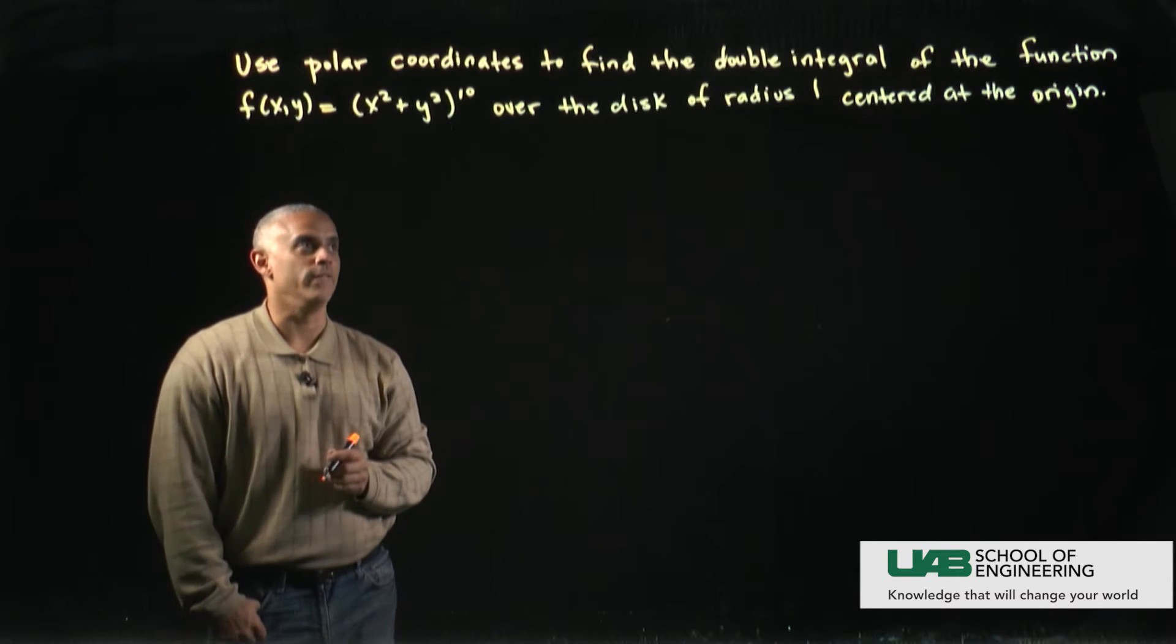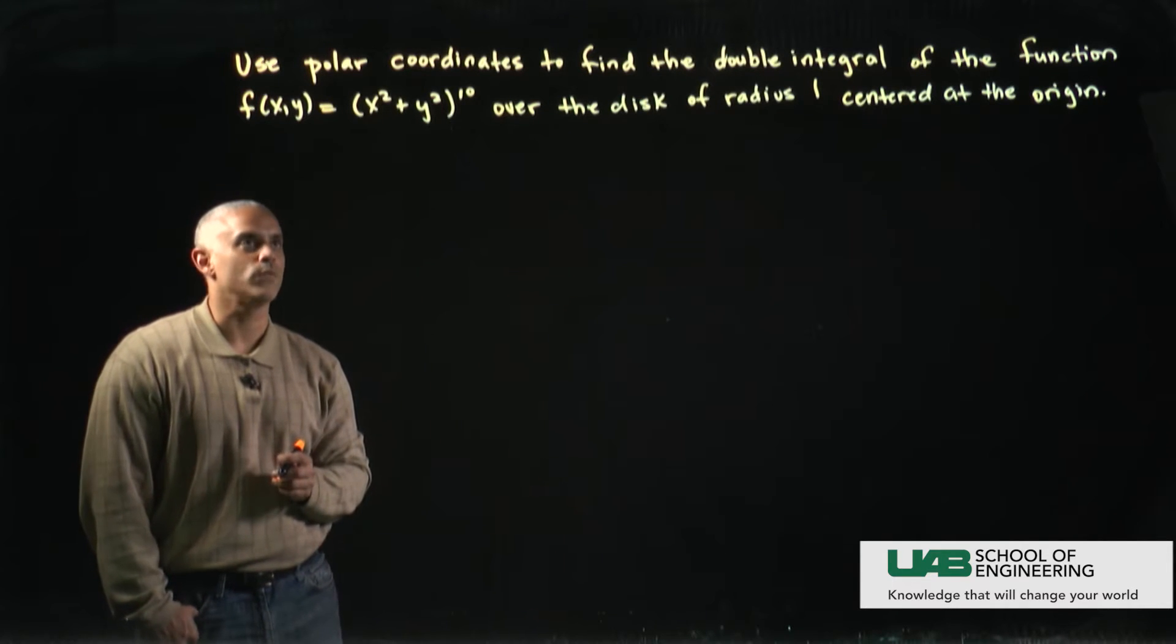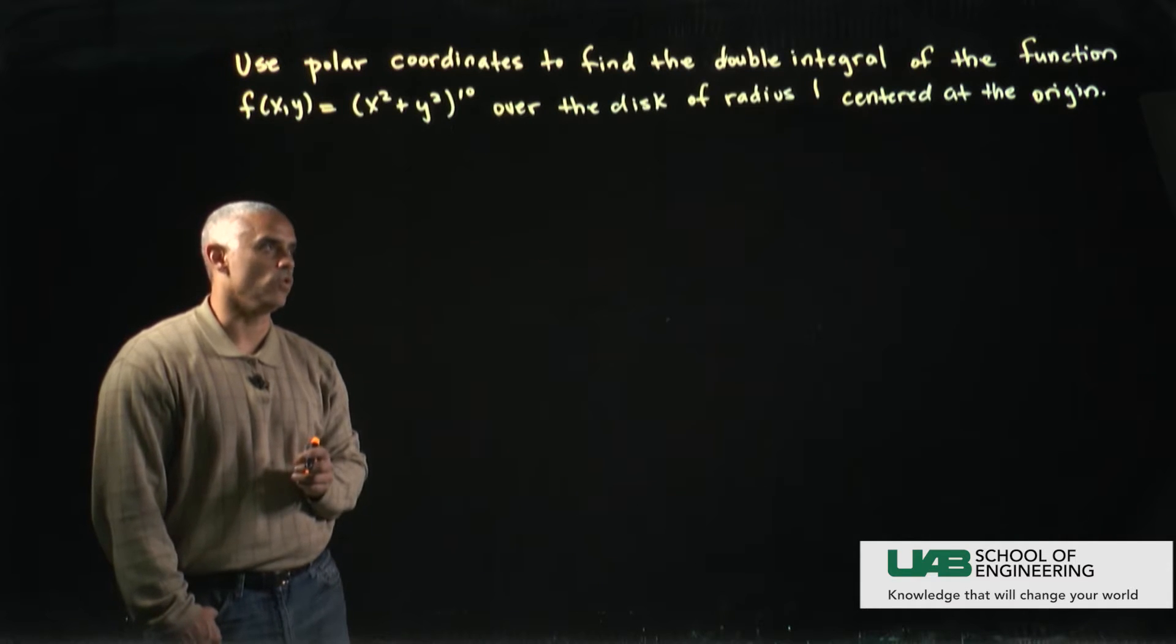Let's use polar coordinates to find the double integral of the function f(x,y) = (x² + y²)^10 over the disk of radius one centered at the origin.